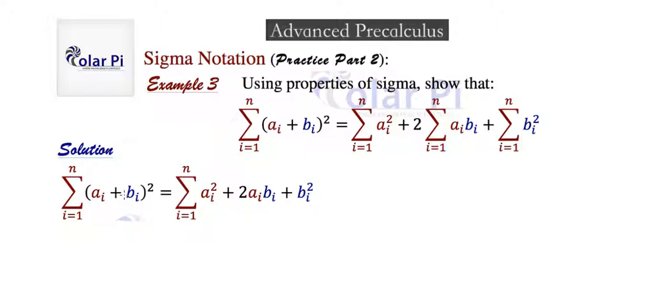In other words, foiling this is all that you need to know how to do. You just need to know how to multiply a_i plus b_i by itself.